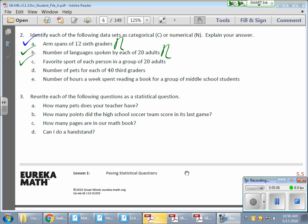Part C: Favorite sport of each person in a group of 20 adults. Those are going to be word answers - maybe baseball, football, soccer. If the answers or the data collected is in the form of words, this is categorical.